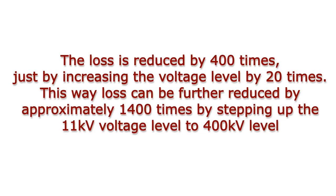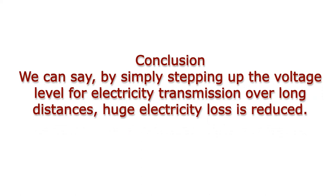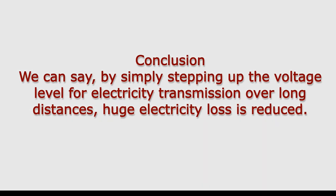After discussing both cases, we can see that the loss is reduced by 400 times just by increasing the voltage level by 20 times. This way, loss can be further reduced by approximately 1,400 times by stepping up the 11 kV voltage level to 400 kV. Simply put, as per Joule's equation of electrical heating, the loss is proportional to the square of the current, meaning the loss is inversely proportional to the square of the voltage. Hence, loss can be reduced proportionally to the square of the voltage step-up ratio. By simply stepping up the voltage level for electricity transmission over long distances, huge electricity loss is reduced.